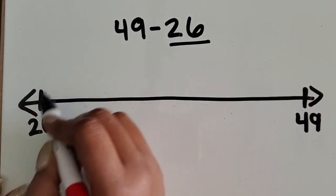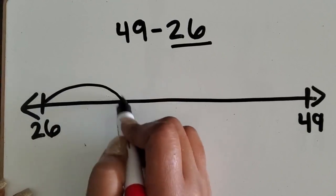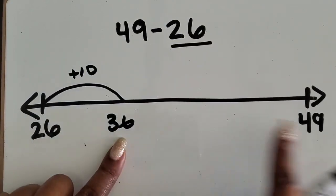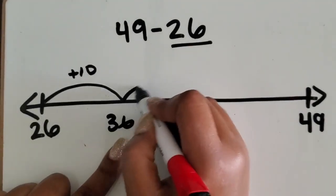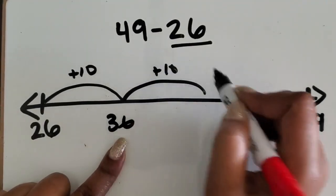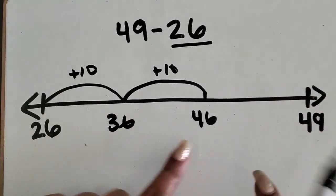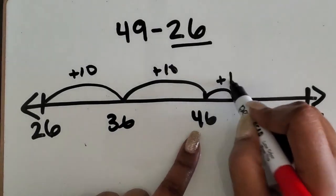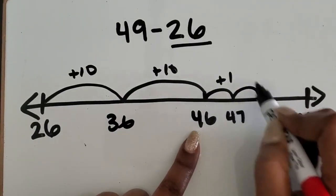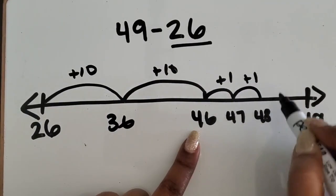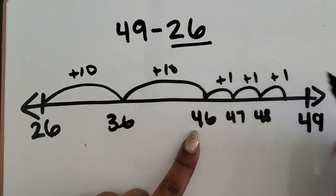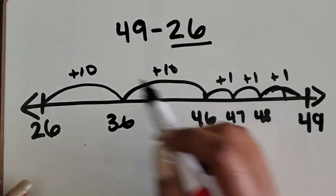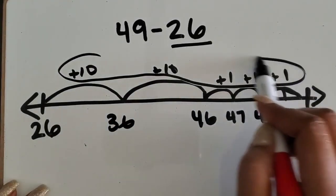There's multiple ways you can do this. I can go up by 10. That gives me 36. I'm not there yet. I can go up 10 more. That gives me 46. From 46 to 49, what do I need? One will give me 47. Another one would be 48. Another one would be 49. Let's stretch that out.